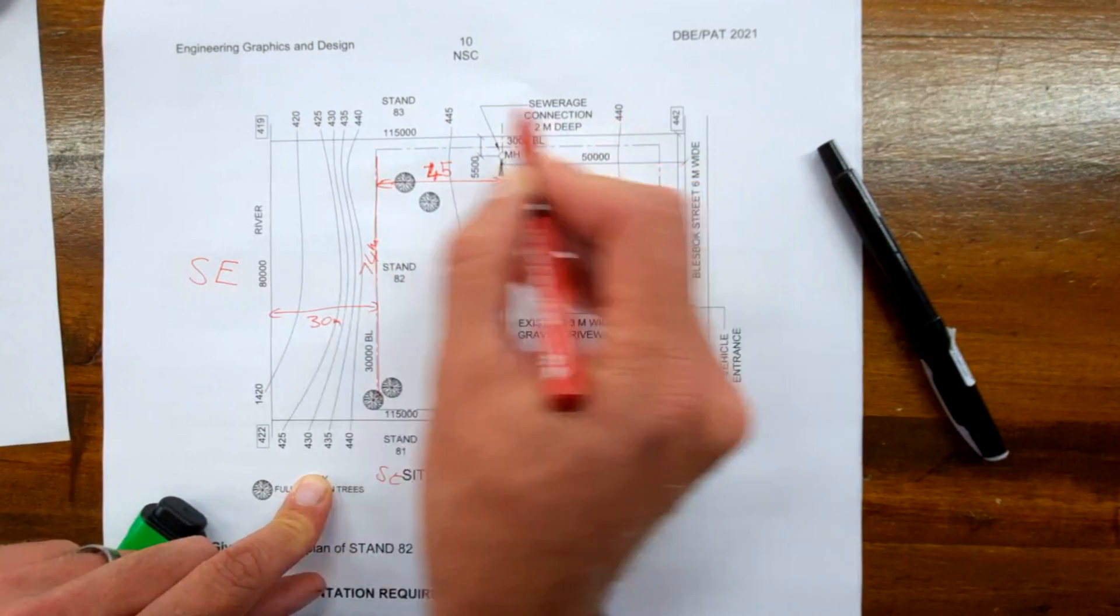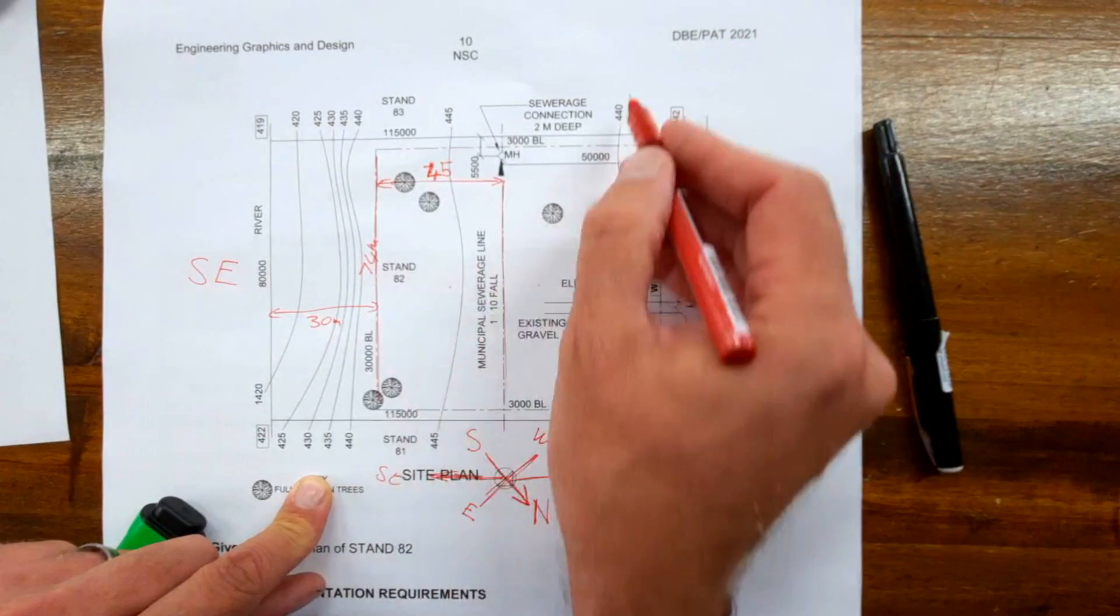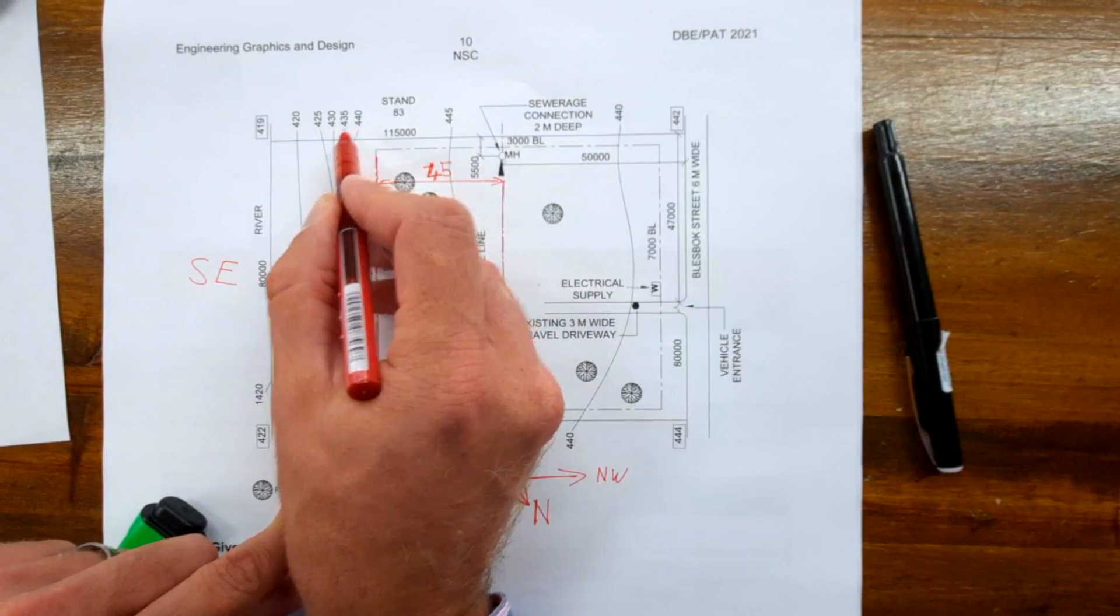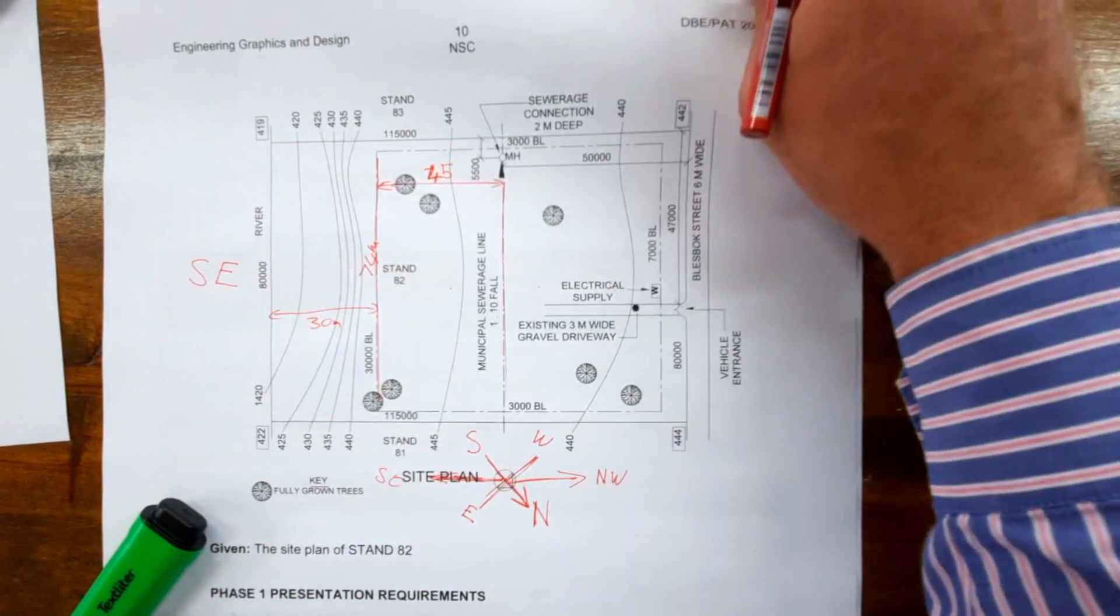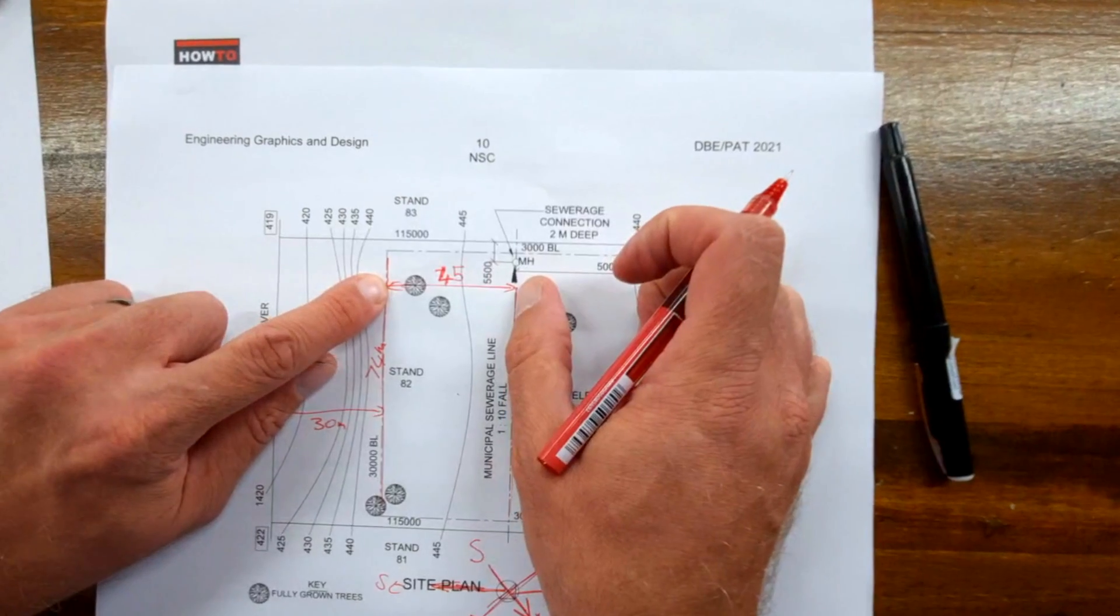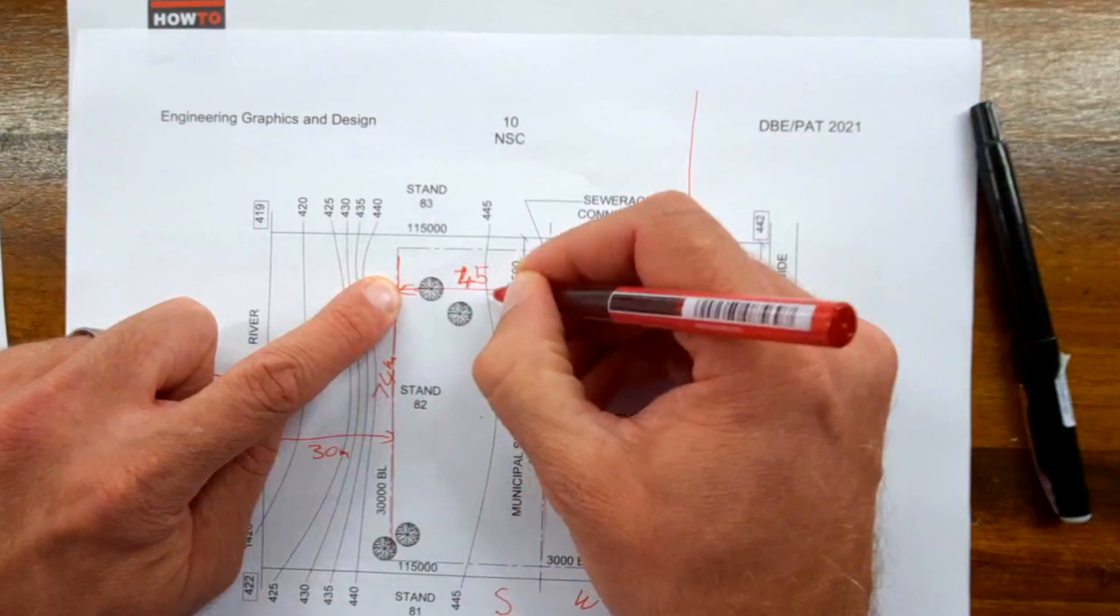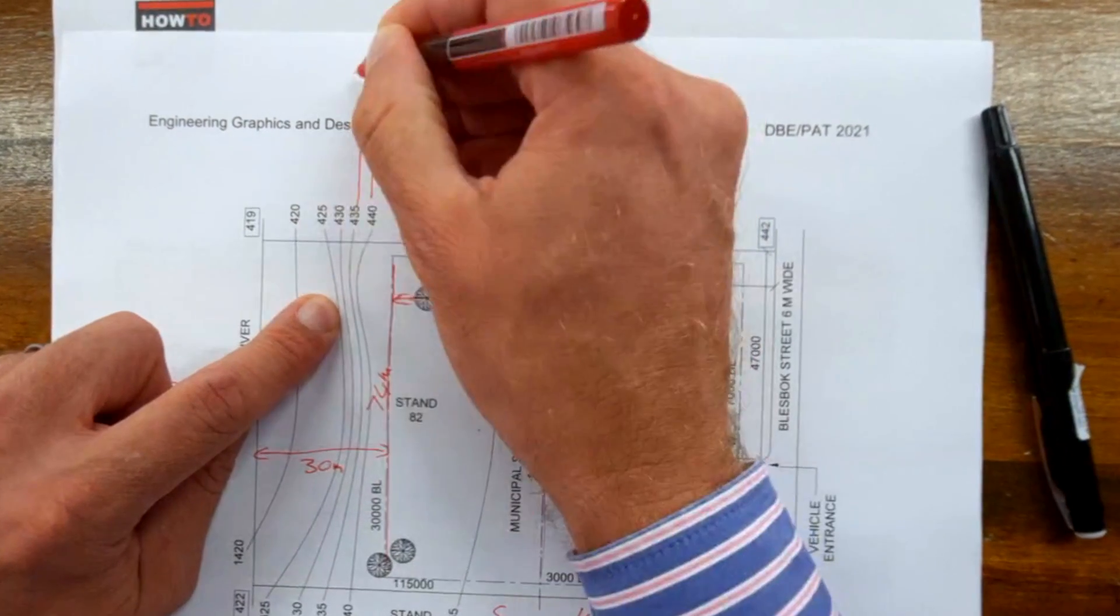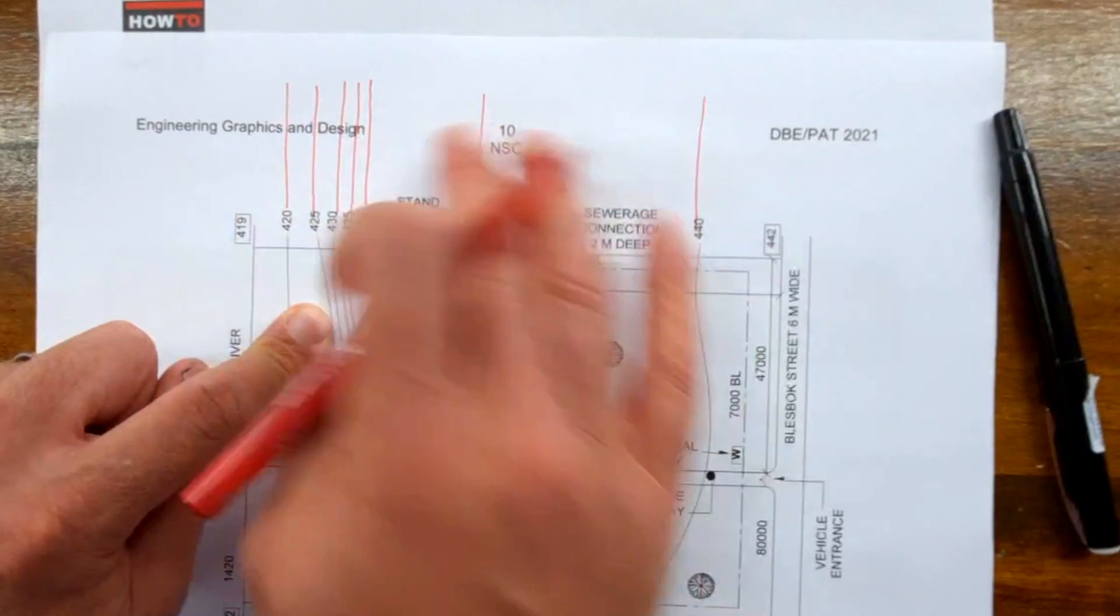I want to add something about these contour lines: they are five meters apart. You can actually do a section on a separate page. We'll do 440 as a benchmark, then 445, and you have another 440, then 435, 430, 425, etc.